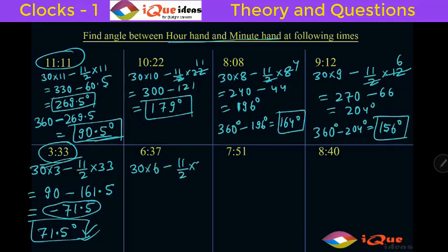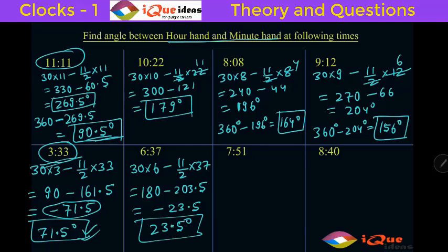For 6:37: 30 times 6 minus (11/2) times 37 = 180 minus 203.5 = minus 23.5. So the answer is 23.5 degrees. For 7:51: 30 times 7 minus (11/2) times 51 = 210 minus 280.5 = minus 70.5. So the answer is 70.5 degrees. If the question simply asks for the angle, the answer is always the positive value.